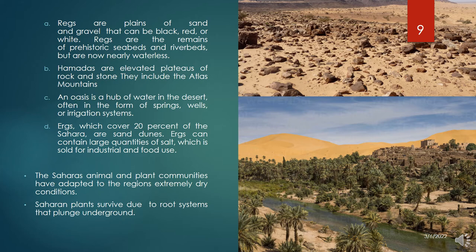The gravel can be black, red, or white. Regs are the remains of prehistoric seabeds and riverbeds, but are now nearly waterless. Hamadas are elevated plateaus of rock and stone. They include the Atlas Mountains, which stretch from southwestern Morocco to northeastern Tunisia; the Tibesti Mountains of southern Libya and northern Chad; and the Ahaggar Mountains in southern Algeria. An oasis is a hub of water in the desert, often in the form of springs, wells, or irrigation systems. About 75% of the Sahara's population lives in oases. Ergs, which cover 20% of the Sahara, are sand dunes. Ergs cover most of Algeria and Libya and parts of Mali and Nigeria.